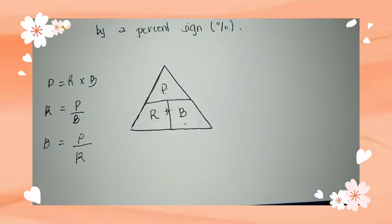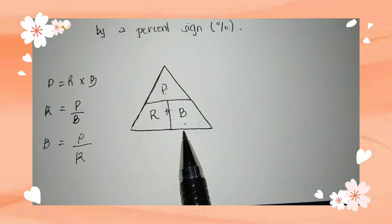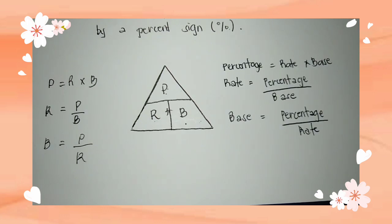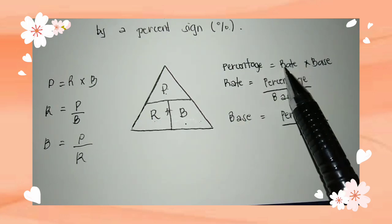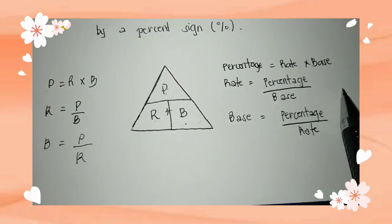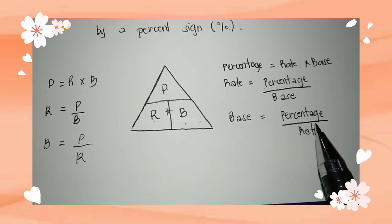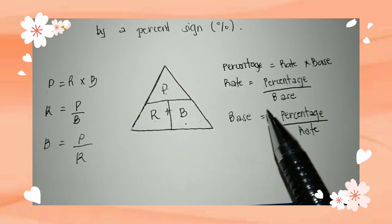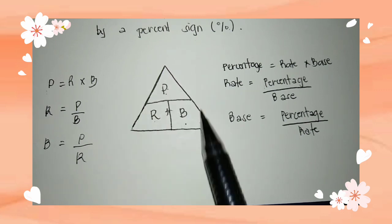It's that simple — just remember this triangle and you can easily recall the formulas even during an exam. So again: percentage is equal to rate times base; rate is equal to percentage over base; and base is equal to percentage over rate. Whenever you need to find percentage, rate, or base, just derive the formula from this triangle — PRB.